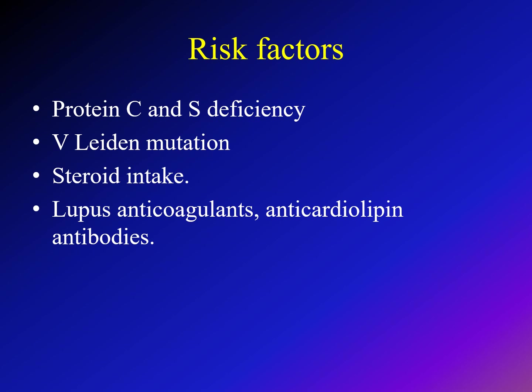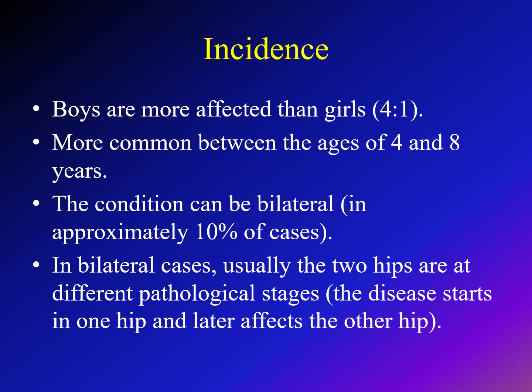Risk factors for Perthes disease include conditions causing increased coagulation, such as protein C and S deficiency, factor V Leiden mutation, steroid intake, lupus anticoagulant, and anticardiolipin antibodies. Regarding incidence, boys are much more affected than girls at a ratio of about 4 to 1, and it usually affects children between the ages of 4 to 8 years. The condition can be bilateral in about 10% of cases; however, the pathology usually starts in one hip then the other, so both hips will be at different pathological stages.